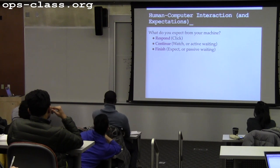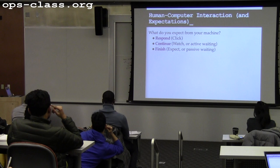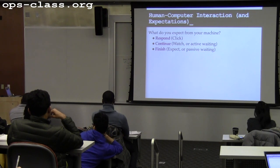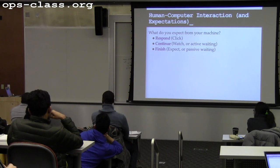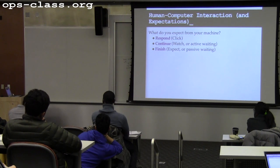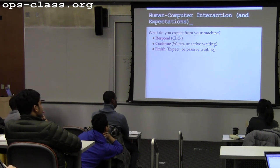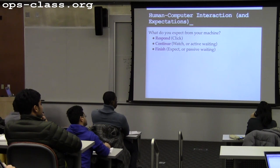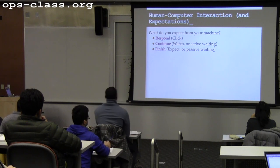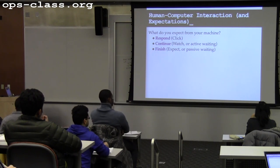Typical usage pattern for interactive systems: one thing we expect is responsiveness. When I click on something or provide some input, I expect the system to do something — usually by running a task that paints to the screen. You will notice if there's a lag when you start to type, or a lag before the menu draws when you click in a particular part of the screen.